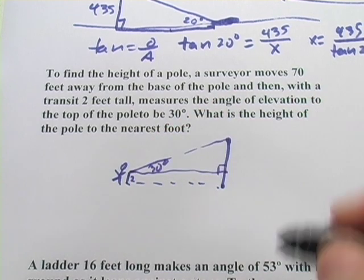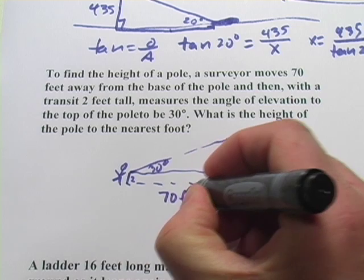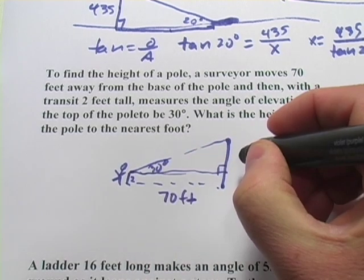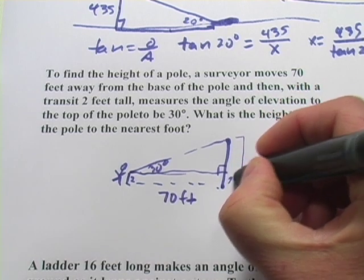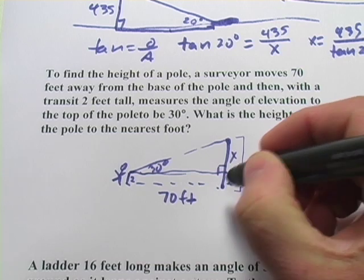Remember, this transit is 2 feet tall. And he's 70 feet away. So we have this side, and we want to find, well, we want to find the whole length here, but we know this part is 2. So we'll find this part here, and then we'll add 2 to it.